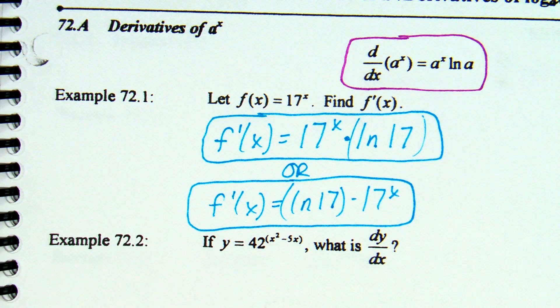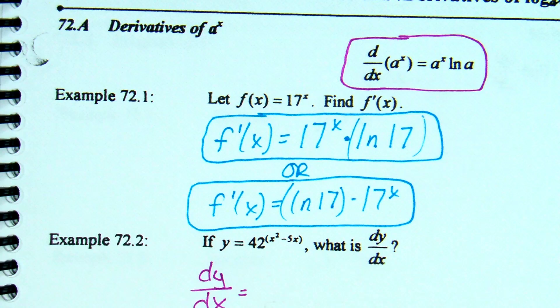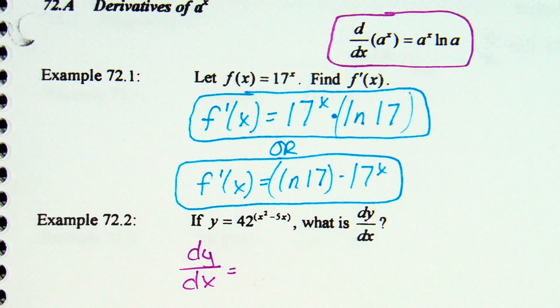Okay, problem 2. If y equals 42 to the x squared minus 5x, what is dy dx? So, we have a number base and we have x in the power. Thoughts on where to start? Nope. Nope, it stays. Nope, it stays. So, yeah, when I say the derivative of a to the x...